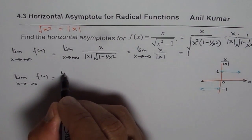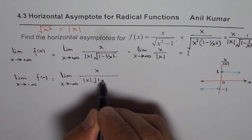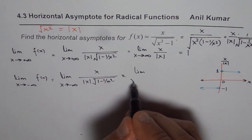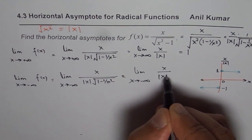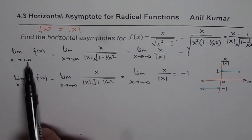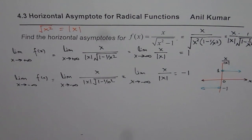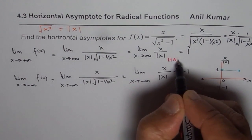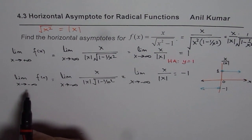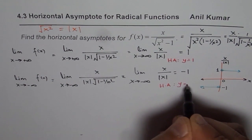That is the next case. The limit as x approaches minus infinity of x over absolute x times the square root of 1 minus 1 over x squared — and since 1 over x squared is 0 — we are left with the limit as x approaches minus infinity of x over absolute x, and that is minus 1. When x approaches positive infinity the value of the function approaches 1, meaning the horizontal asymptote is y equals 1. And as x approaches minus infinity, the limit approaches minus 1, so the horizontal asymptote is y equals minus 1.